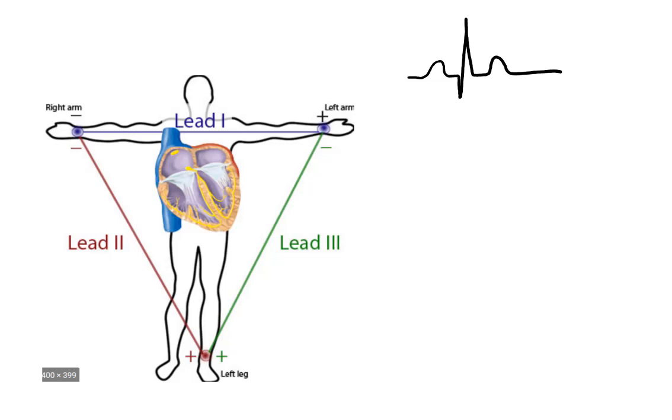If we are talking about the depolarization of the ventricles, it's going to be larger waves from lead two. The reason being that when the depolarization is going down the interventricular septum, lead two is going to be the most parallel.